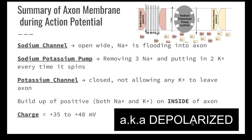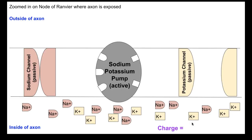We don't want to stay like this all the time — we do want to go back to polarized, or back to rest. We have to do a process to get back to that point; we don't want to stay depolarized all the time. This would cause a tremor if your sodium channel was constantly open, since you'd constantly be receiving an impulse. We have to go back to normal before we can receive another impulse. This process is called the recovery period — you can also call it the refractory period, or repolarization.